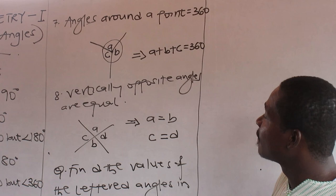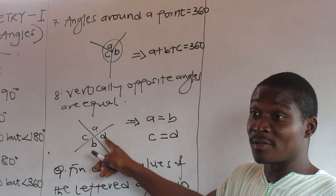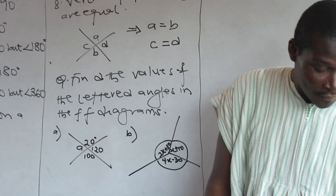Vertical opposite angles: this is vertical, this is horizontal. When lines cross, vertical opposite angles are equal. So if here it's a, here it's a. If here it's b, here it's b.